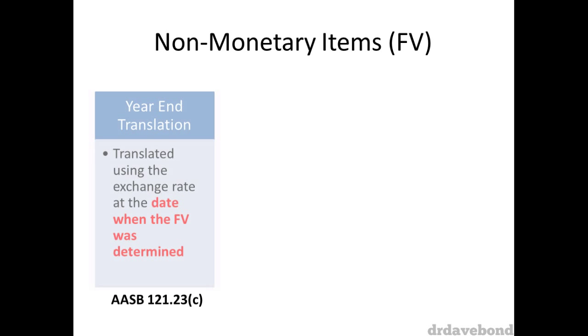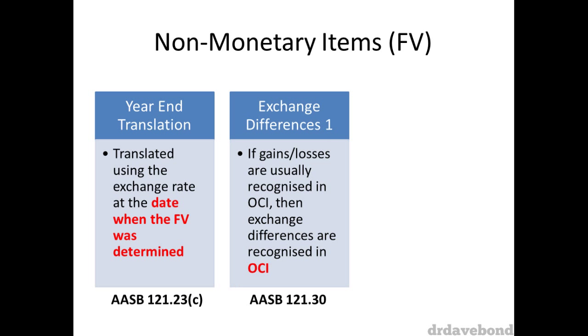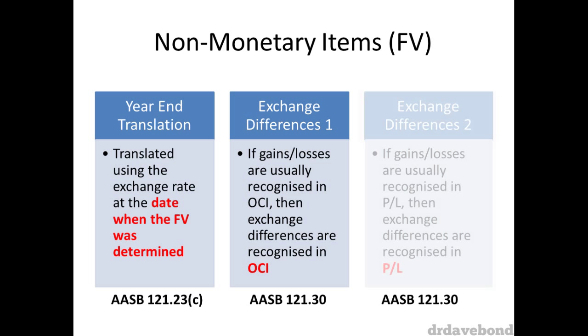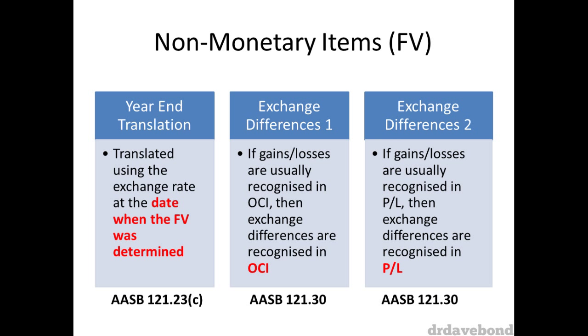Turning to fair value non-monetary items — these are translated using the exchange rate at the date when the fair value was determined. Gains and losses are dealt with in the same way as historic cost non-monetary items: if gains or losses are usually recognized in OCI, then exchange differences are also recognized in OCI; if gains or losses are usually recognized in profit or loss, then the exchange differences are recognized in profit or loss.